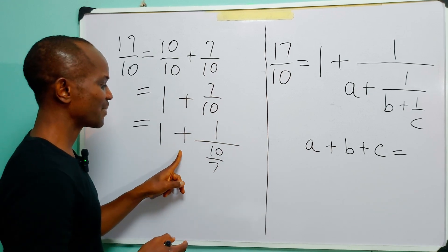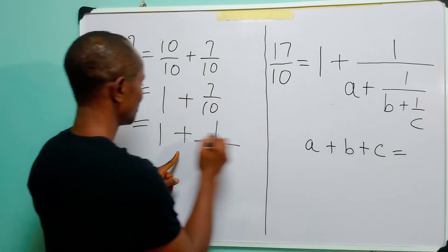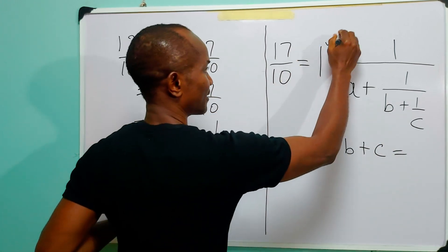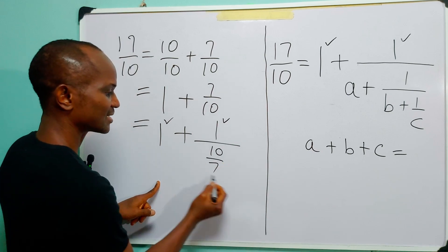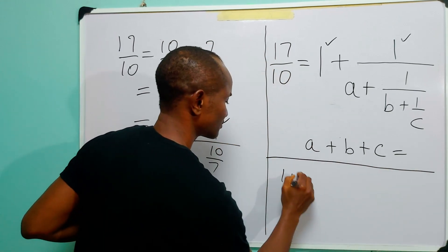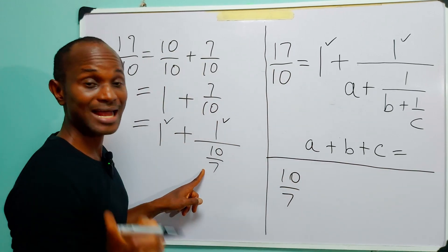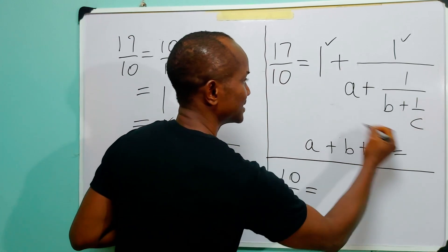But now, when you compare this to this, you will see that there's 1 here. There's 1 here. That simply means that 10 over 7 is now equal to this...